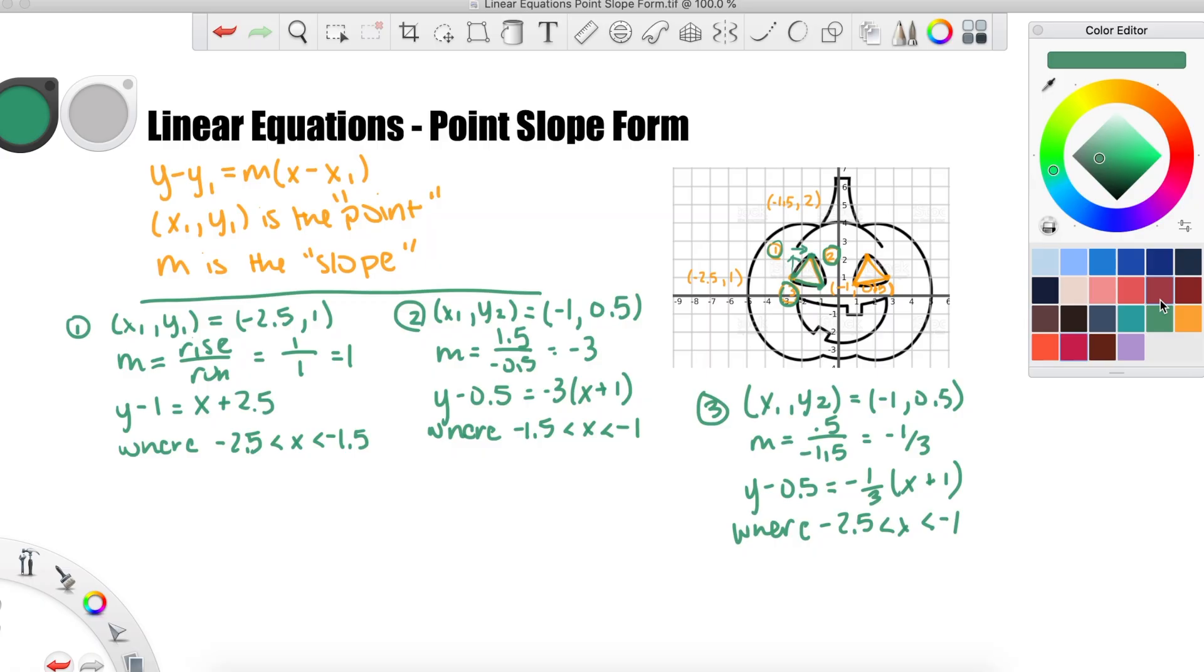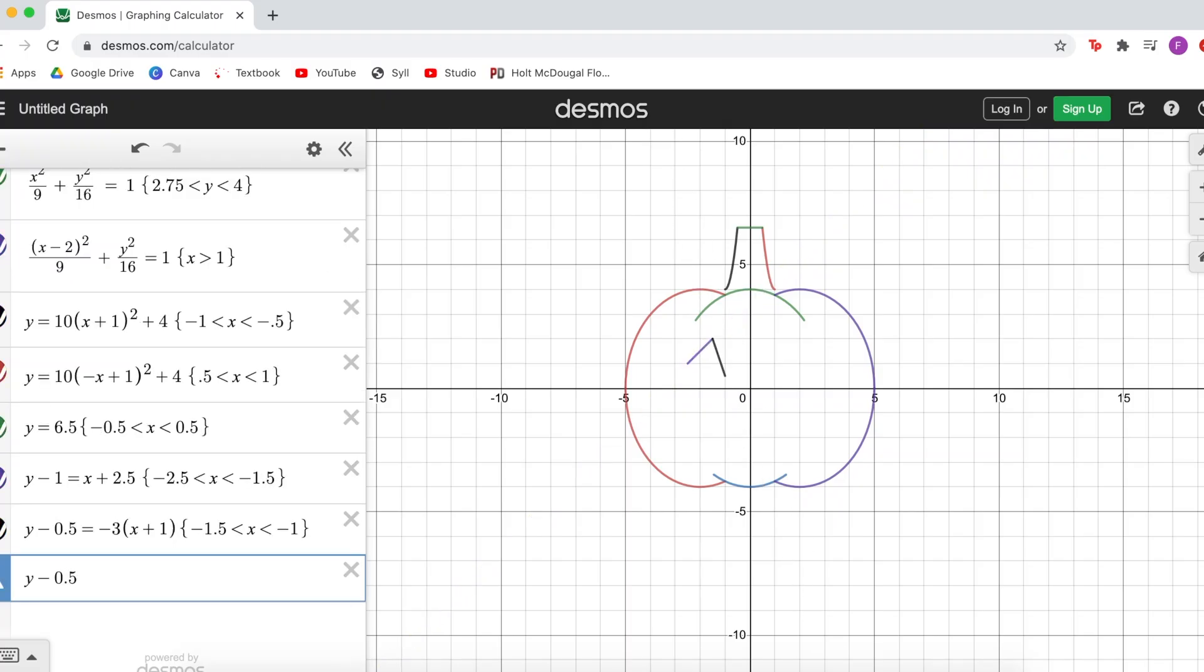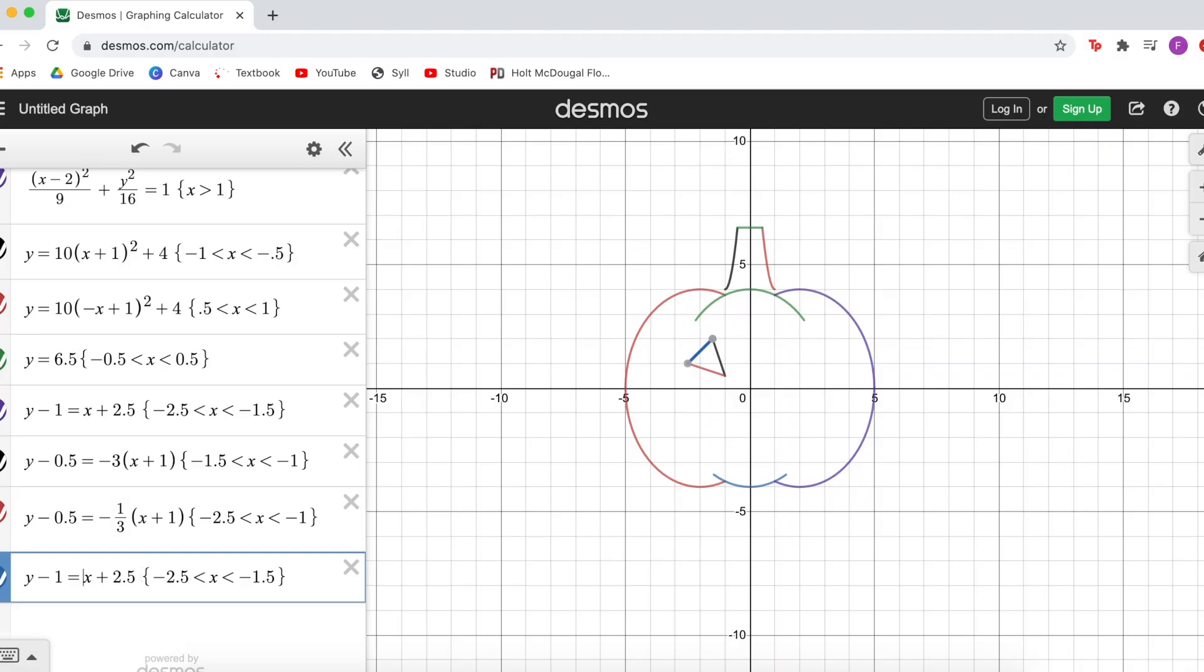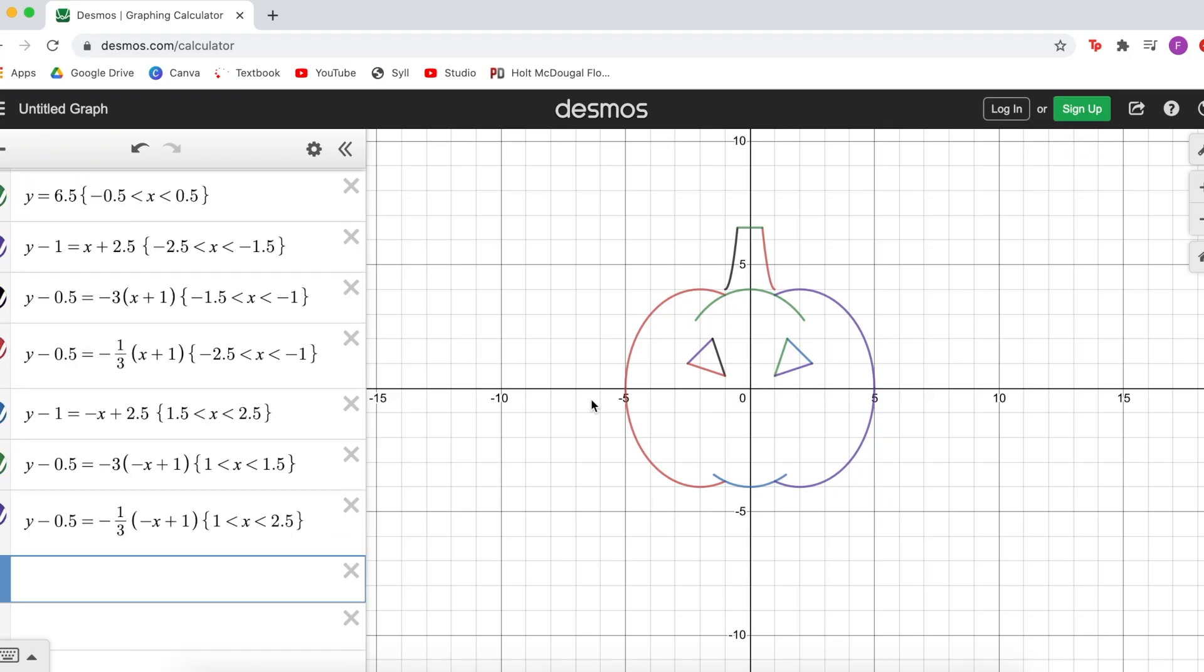And like I said before, the other eye is just the same as this one, except the x values are negative. Now for graphing, I'll type everything in. And for the right eye, like I mentioned, I'm just going to put a negative in front of the x, and obviously update the domains. There we have it, we're so close!